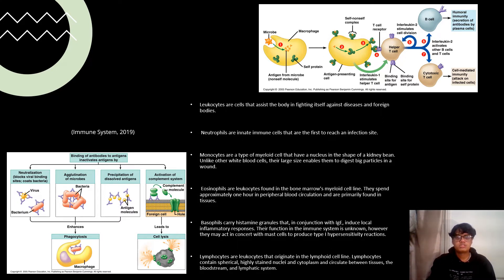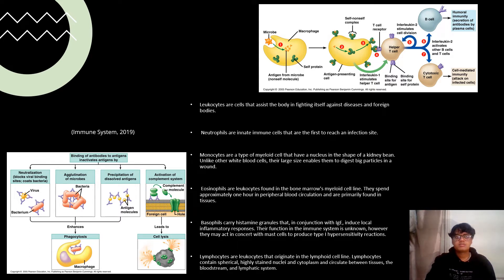Monocytes play a critical role in the immunological response to bacterial infection. Unlike other white blood cells, their large size enables them to digest large particles in a wound. Eosinophils spend approximately one hour in blood circulation and are primarily found in tissues. Major basic protein, cationic protein, and peroxidase are all found in their granules. Basophils circulate in the blood and have an approximate lifespan of two weeks.